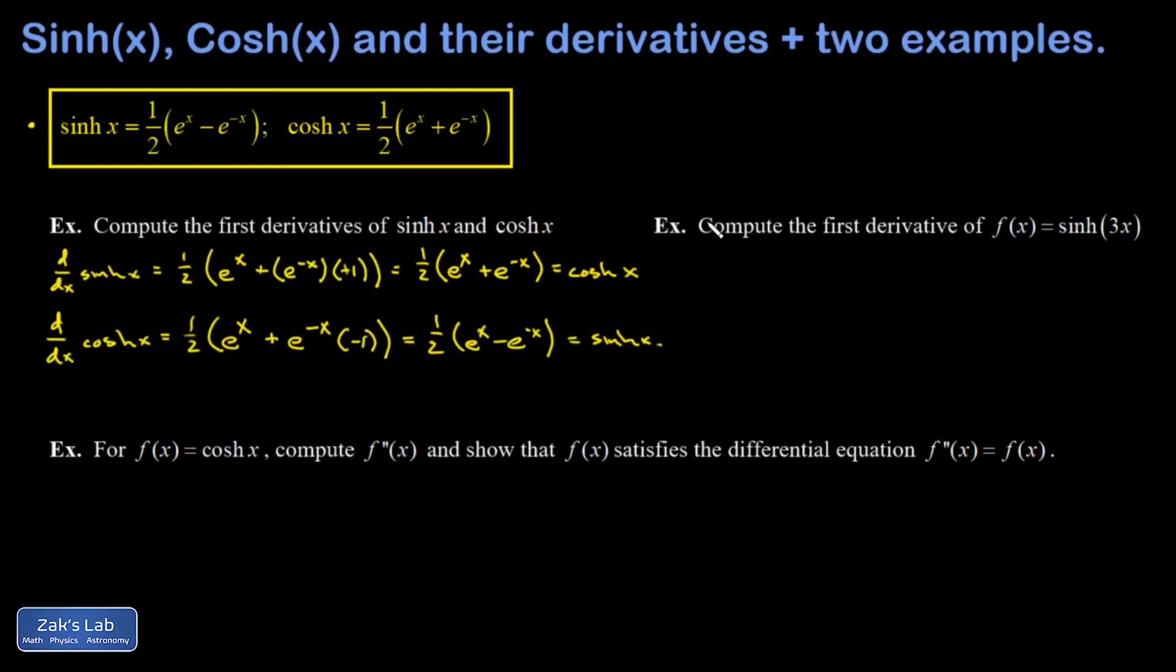In the next example, we want to compute the first derivative of sinh of 3x. So it's just a little chain rule problem. To get this, I would differentiate with respect to 3x, which gives me cosh 3x, treating 3x like it's just a single variable. And then the chain rule says, now you got to multiply by the derivative of 3x with respect to x. So I get a factor of 3 out of that. And now I have 3 cosh 3x.